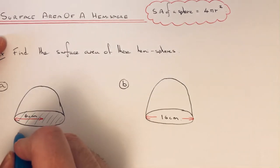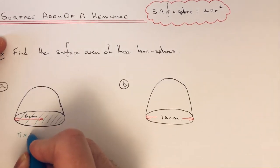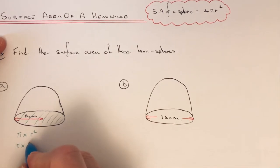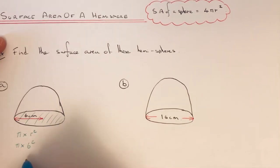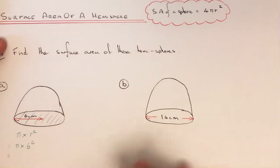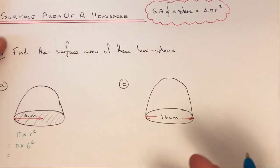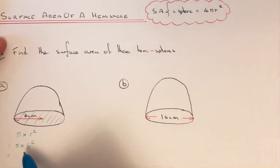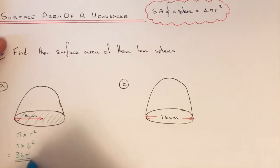So we do π times radius squared. It would be π times 6², because 6 is the radius, which is halfway across. I'm going to try and do most of this question without a calculator, so we're going to leave it in terms of π. 6² is 36, and we're just timesing that by π, so we can write that as 36π.